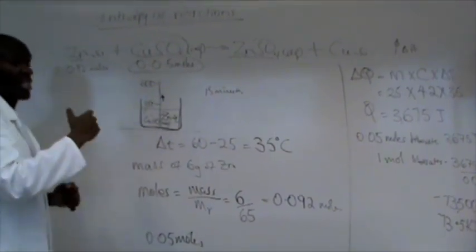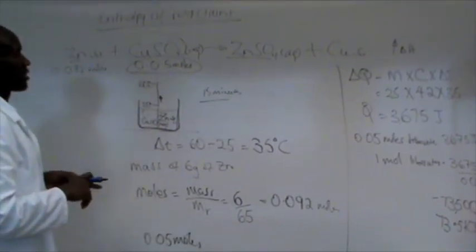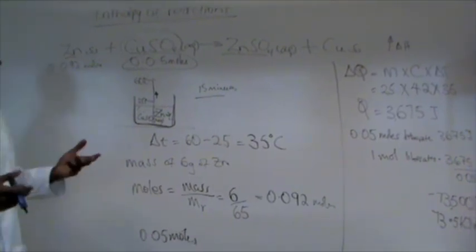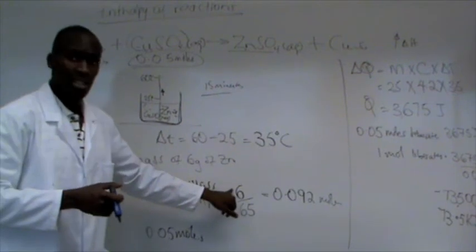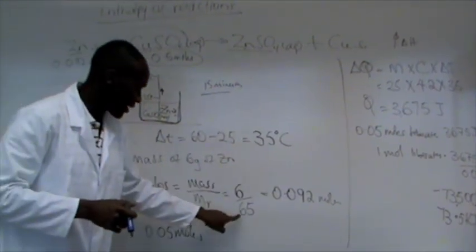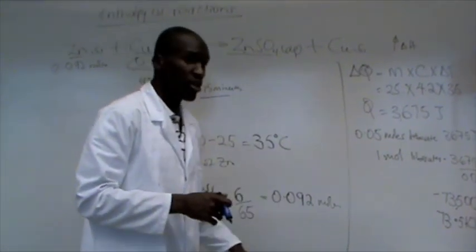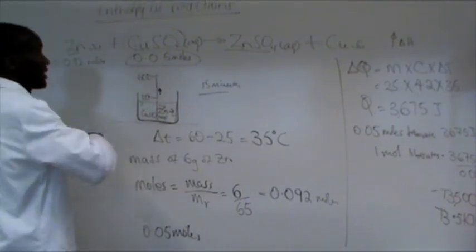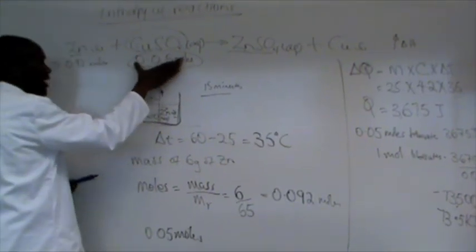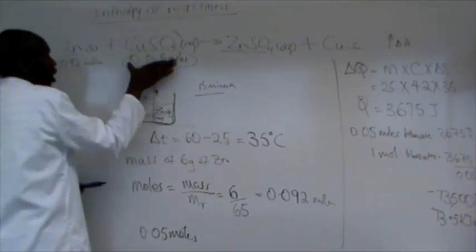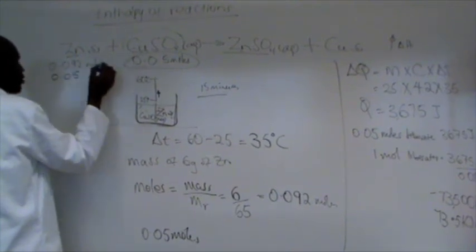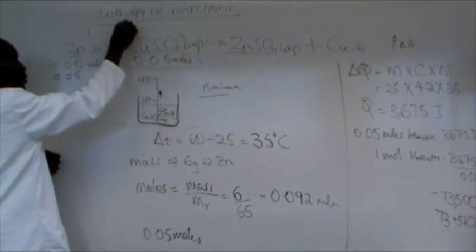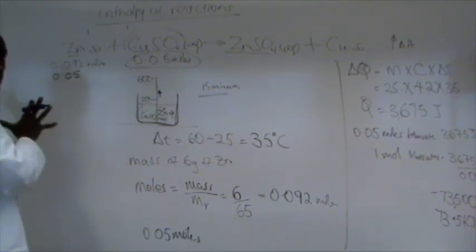Now, next, we work out the moles that reacted. The moles of zinc, we discover we had 6 grams that we added to it. So, we get 6 over the relative molecular atomic mass of zinc. Those are the moles. But we discover zinc had more moles than copper sulfate. And obviously, logically, we have to understand that because copper sulfate has fewer moles and zinc has more moles, only 0.05 moles of zinc are going to react with 0.05 moles of copper sulfate because the reaction ratio is 1 to 1. The other ones won't react. They will just remain in the solution.